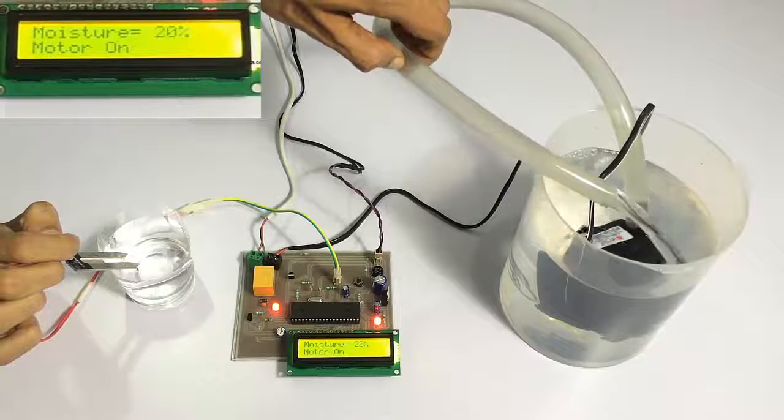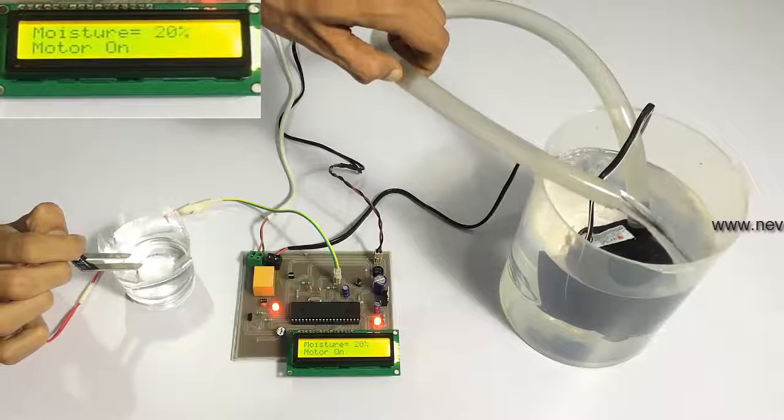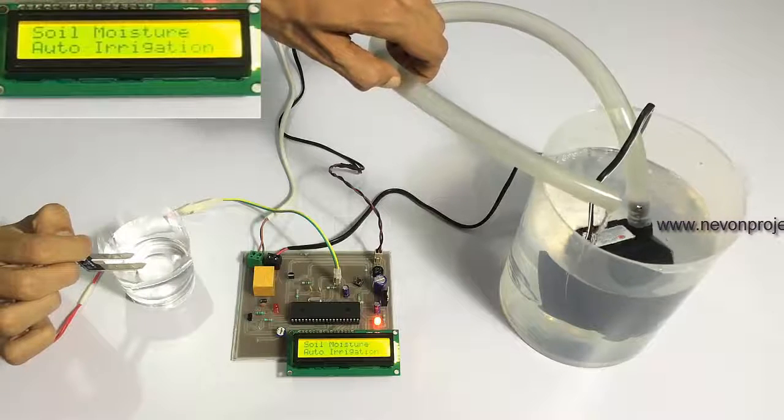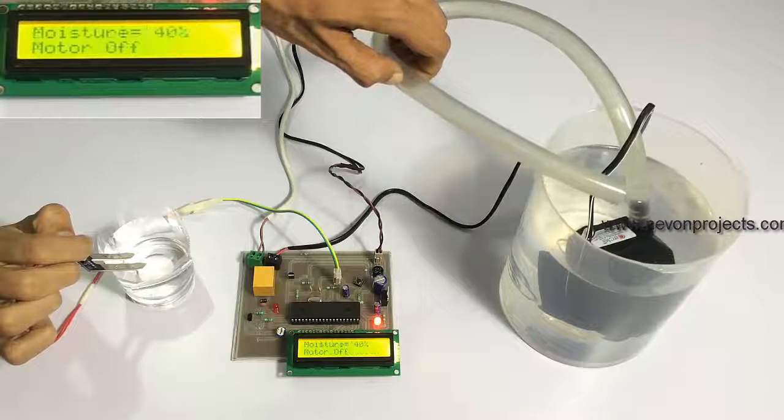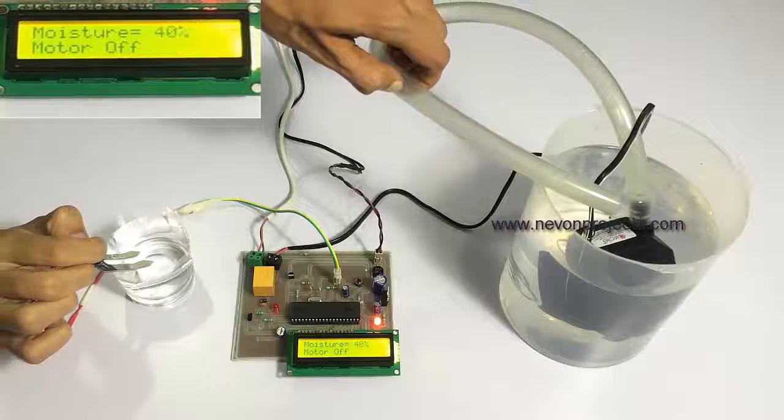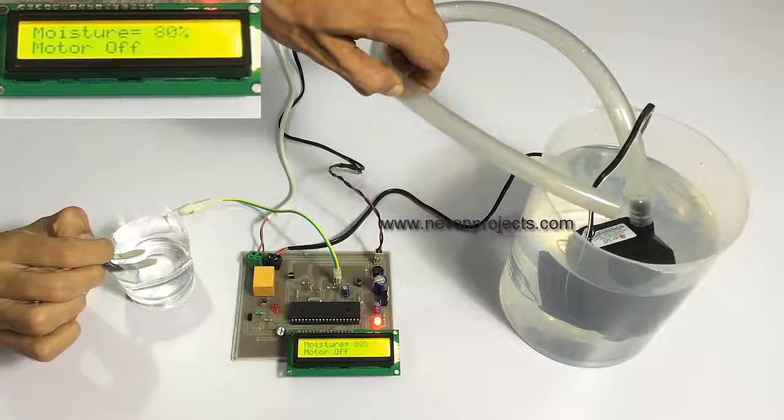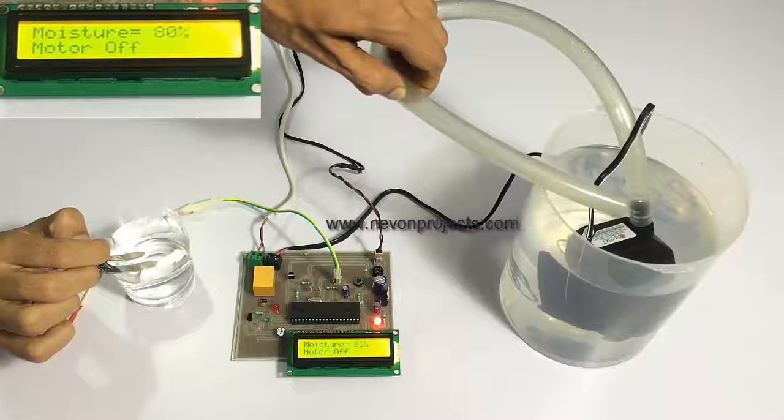As you can see, it's showing the water content of the soil as we insert the sensor deeper. As it went above 40%, you can see it stopped the irrigation since the soil had enough water or moisture content.